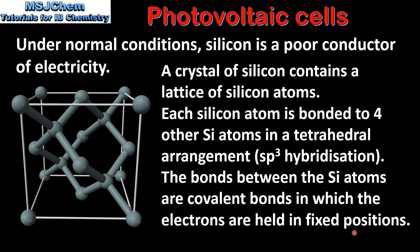Therefore, because the electrons are not free to move within the lattice structure, under normal conditions silicon is a poor conductor of electricity.